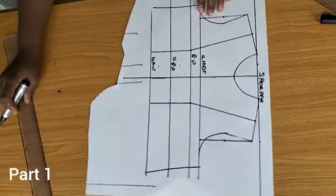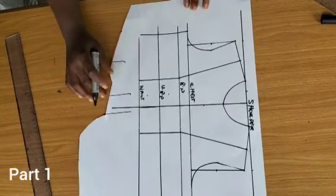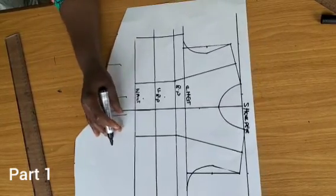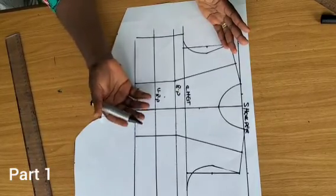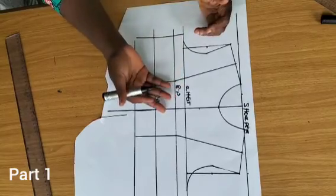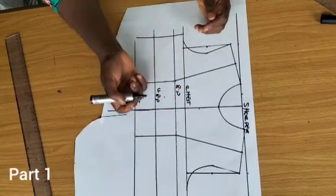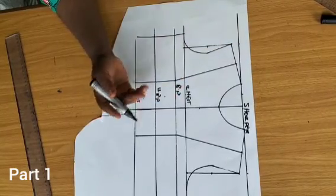The dart we are making here is a shoulder dart. Just as it is right there on the thumbnail, if you actually want to get it the way it is, it's a shoulder dart we have there. Otherwise I could have loved to make a princess dart, so you choose which dart you want to make.